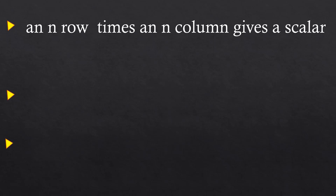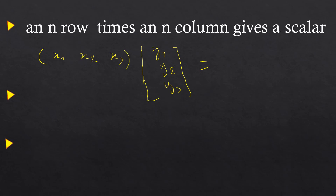Let's summarize. A 1 by N row times an N by 1 column gives a scalar. For example, [x1, x2, x3] times [y1, y2, y3] gives x1·y1 plus x2·y2 plus x3·y3. So this is the big idea of the multiplication of matrices: row times column with the same length. An N row means a row with N entries, and an N column means a column with N rows.